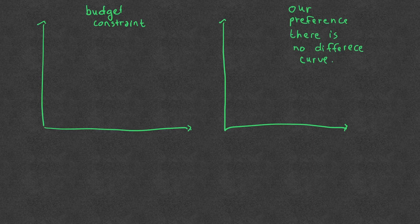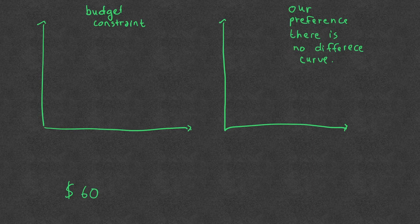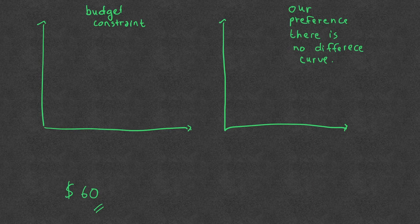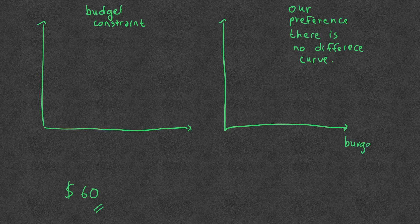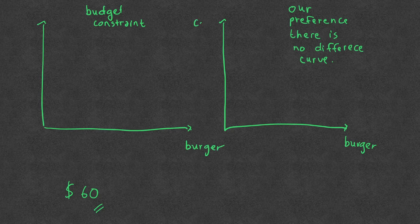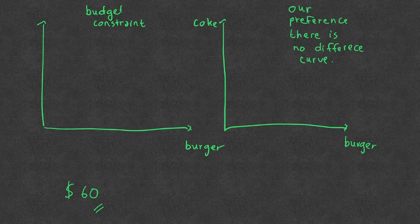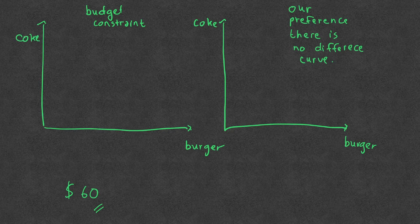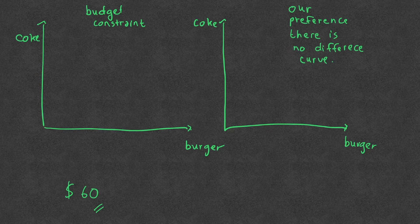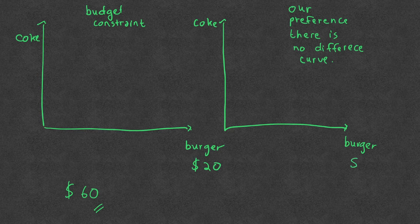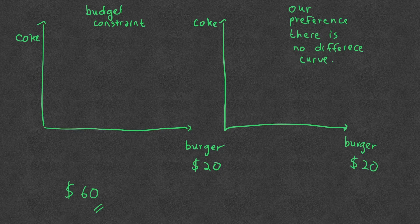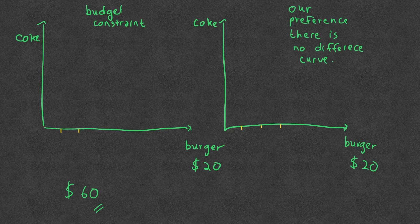Let's say now we have money of $60, and here is the amount of burger and this is coke. With $60, if each burger costs $20, it means we can buy one, two, and three burgers with $60.